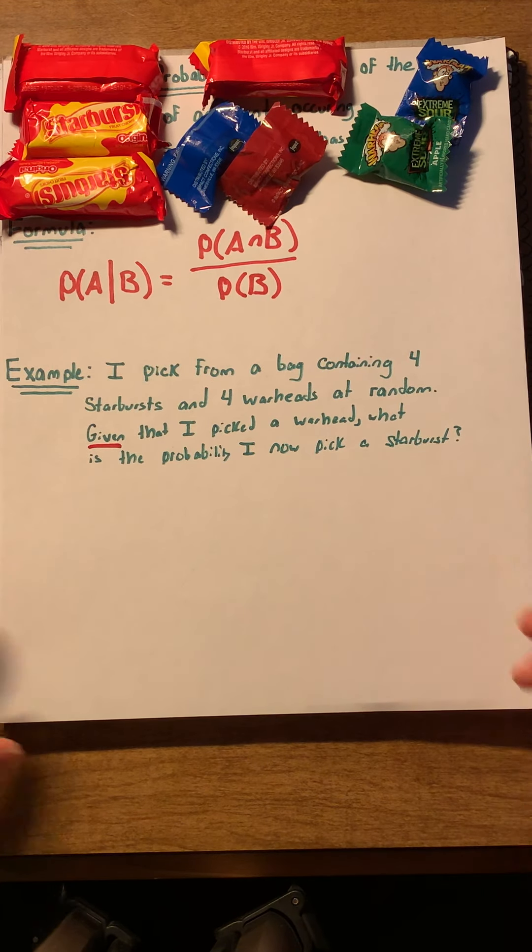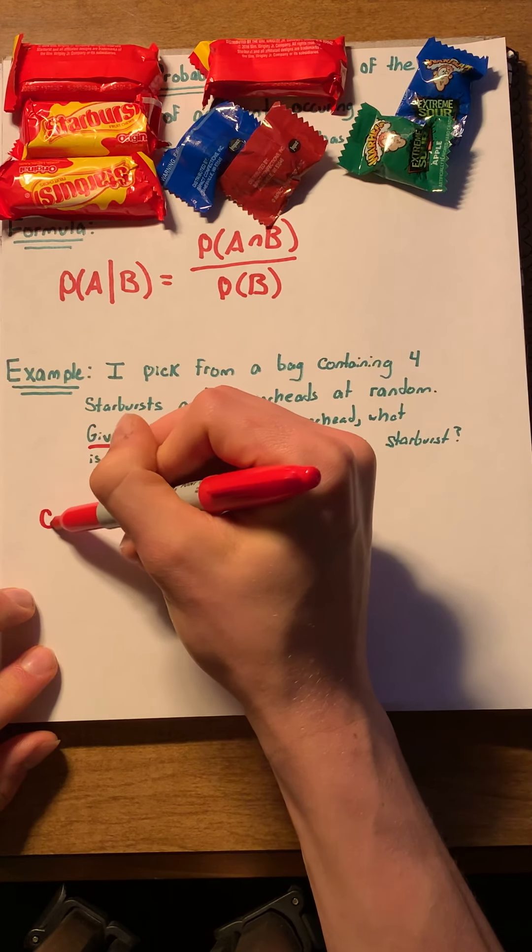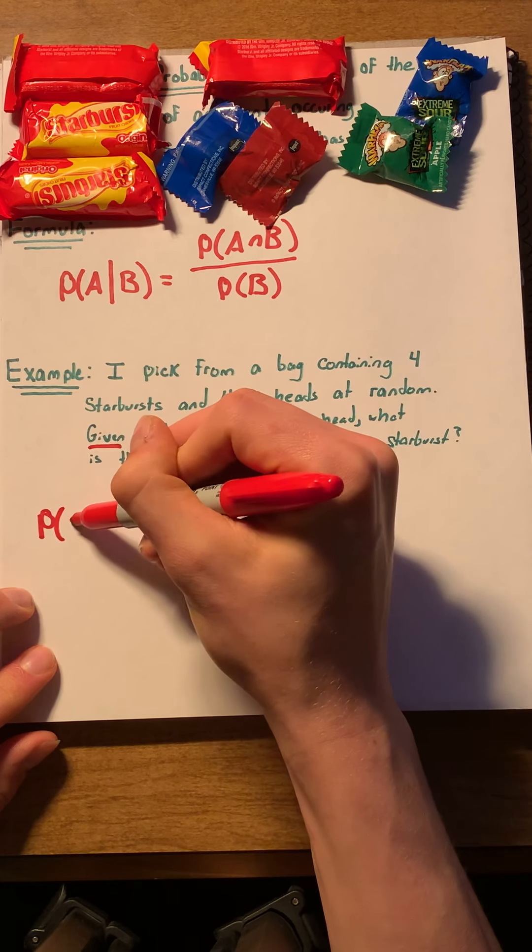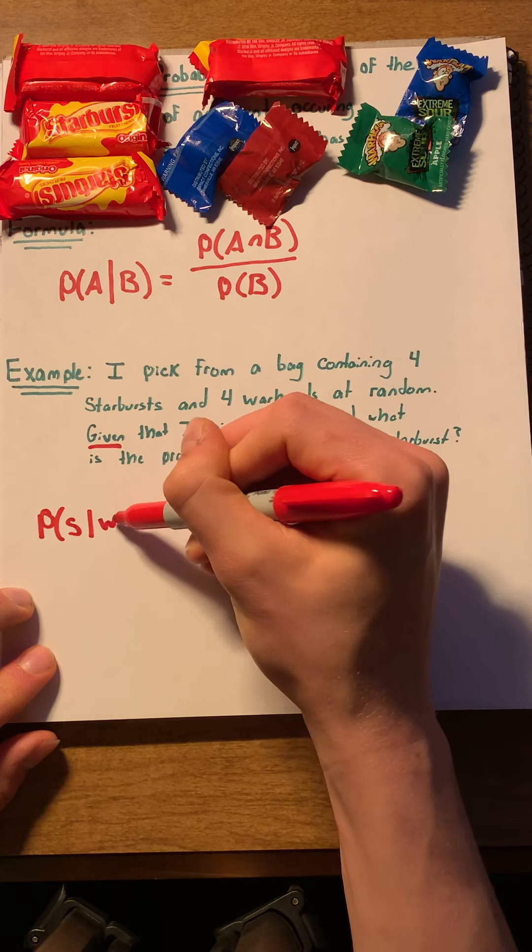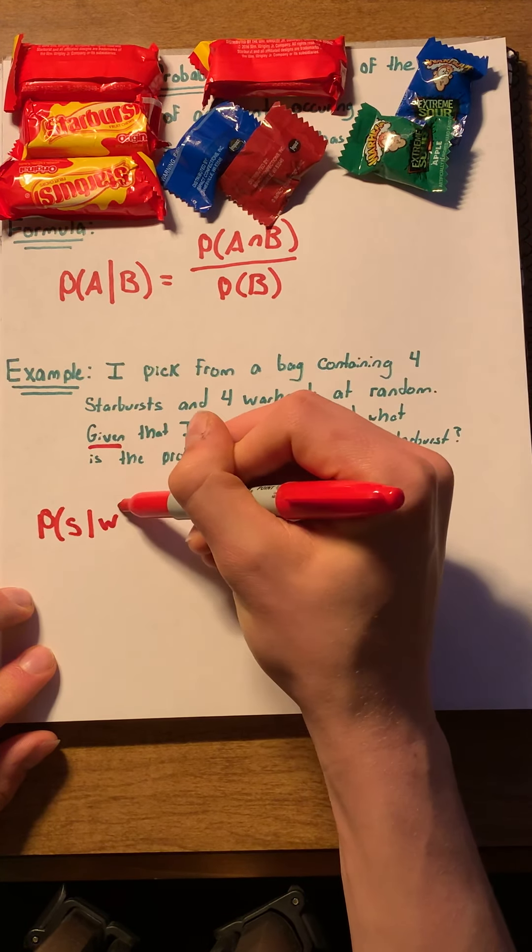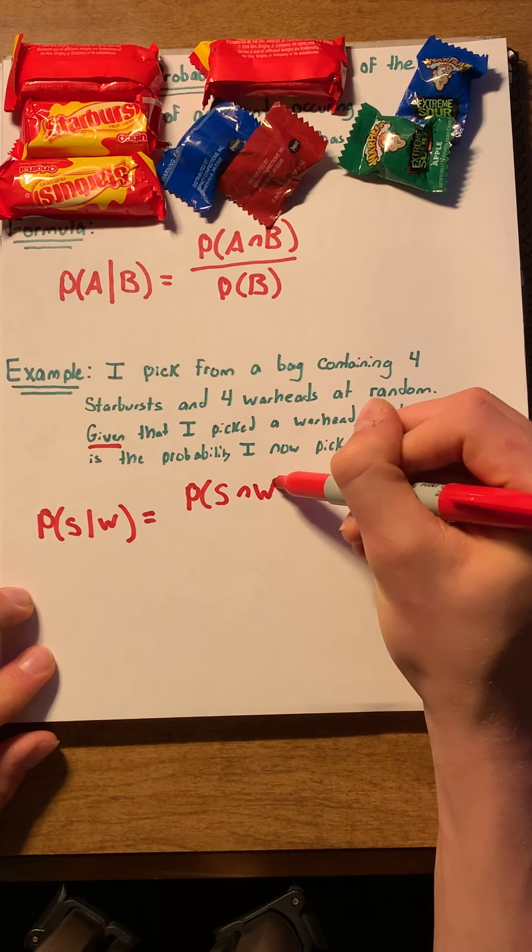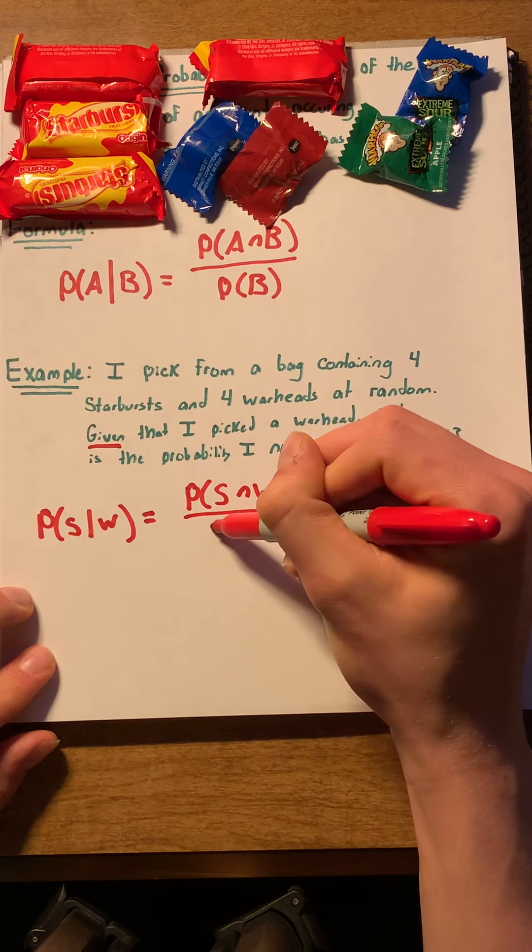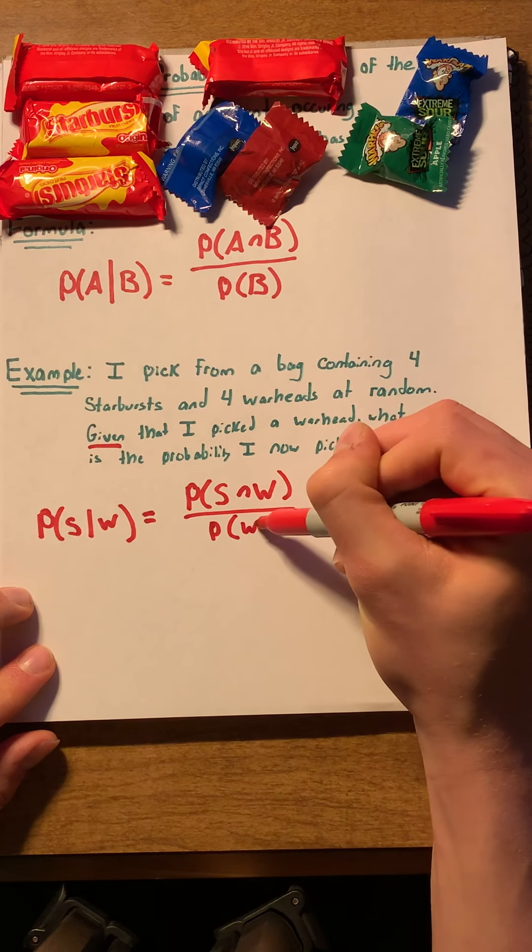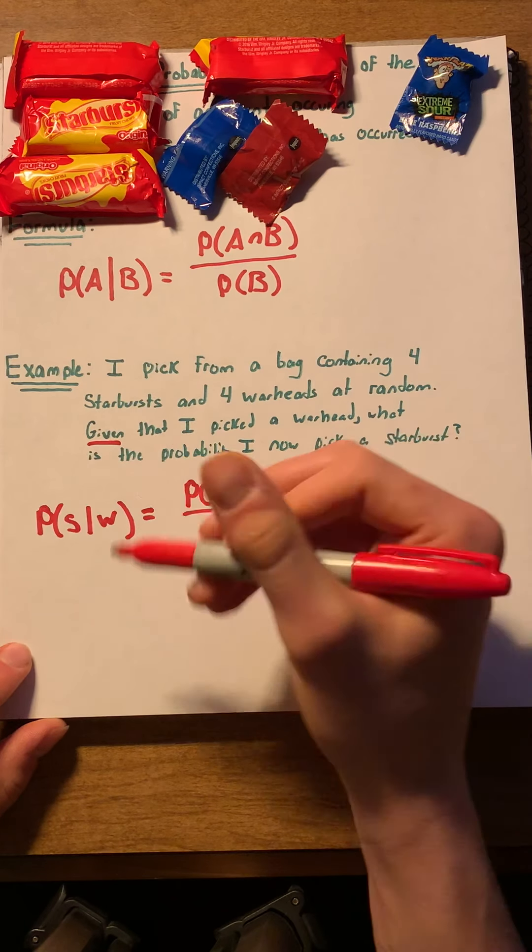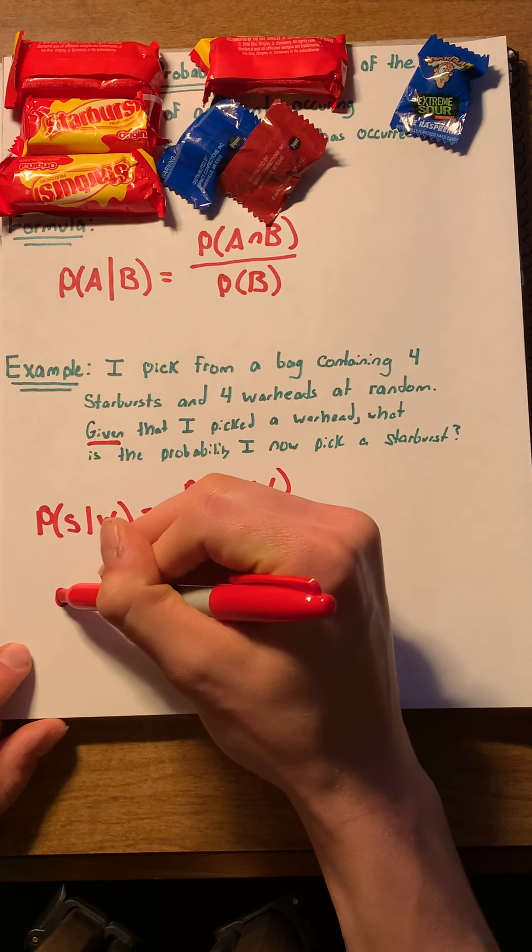We can start here by just writing out our formula. The probability of starburst given warhead is equal to the probability of starburst and warhead over the probability of warhead. It's important to remember that we are calculating this given the fact that I have already picked a warhead. So, we need to pick one warhead out. Perfect. Let's start by calculating the probability of starburst and warhead.